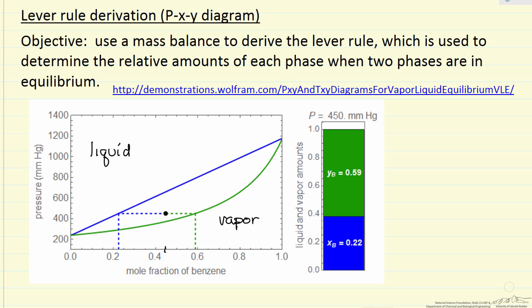I'm going to derive the lever rule, which we use often when we're looking at two phases in equilibrium, and we know the overall composition, and we want to know how much of each phase do we have.